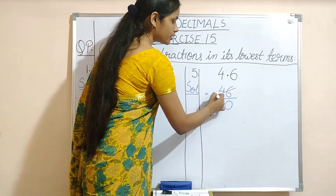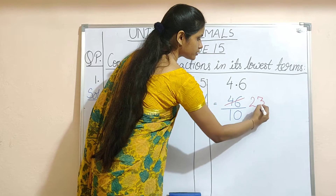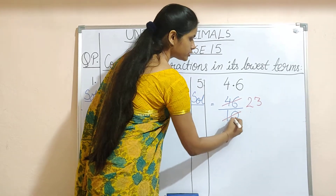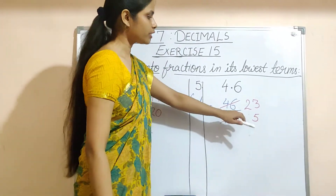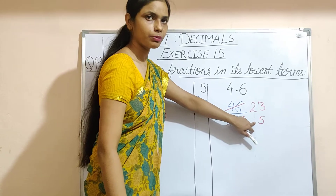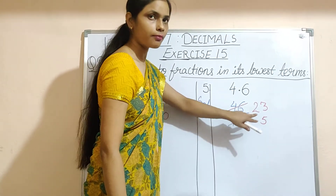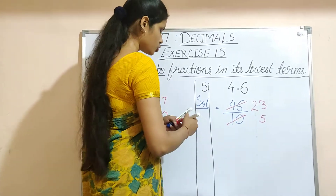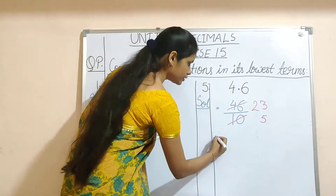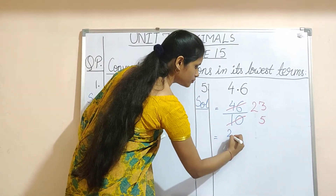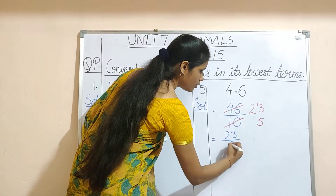So it can be divided by 2. 2 twos are 4, 2 threes are 6, and 2 fives are 10. Now we have 5 as a prime number and 23. They don't have a common factor. So the answer of 4.6 in its lowest term is 23 upon 5.